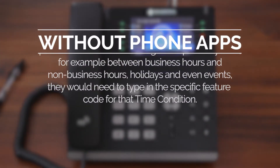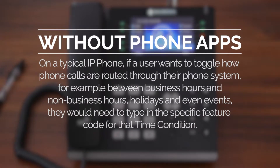On a typical IP phone, if a user wants to toggle how phone calls are routed through their phone system — for example between business hours and non-business hours, holidays, and even events — they would need to type in the specific feature code for that time condition, and it can be pretty tricky to remember all these codes.